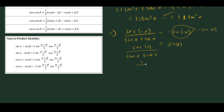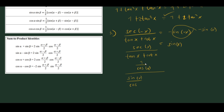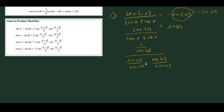We have (1/cos x) in the numerator. In the denominator, tangent is sin x/cos x and cotangent is cos x/sin x. So the full expression is (1/cos x) divided by (sin x/cos x + cos x/sin x).